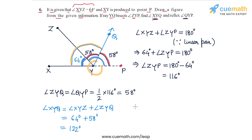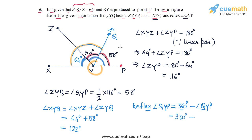We can also find reflex angle QYP, which is simply 360 degrees minus angle QYP, because the sum of angles at a point is 360 degrees. To find the reflex angle, we subtract the normal angle from 360 degrees. Angle QYP is 58 degrees, so 360 degrees minus 58 degrees equals 302 degrees. So the answer is: angle XYQ is 122 degrees and reflex angle QYP is 302 degrees.